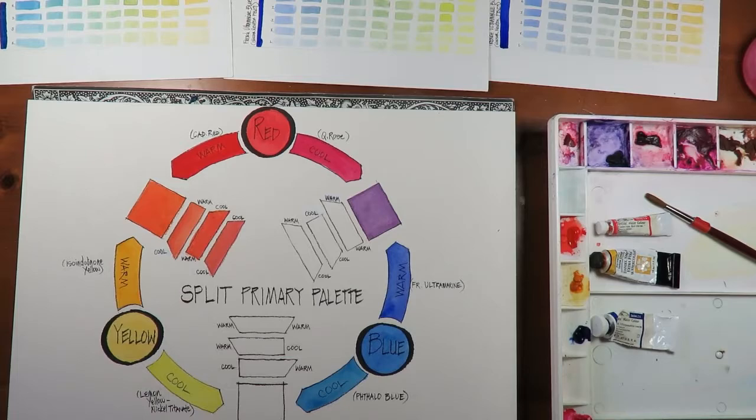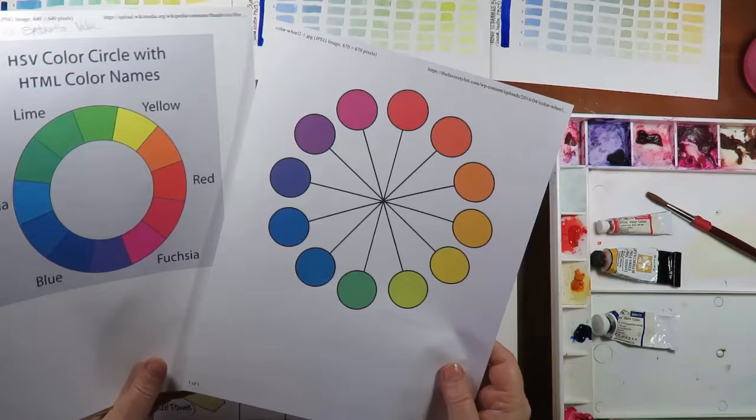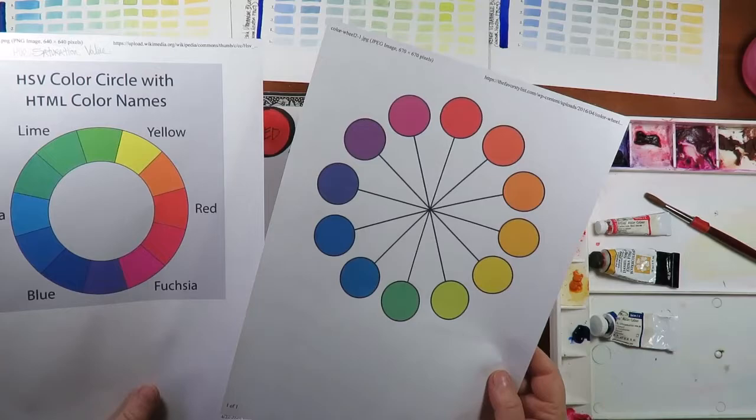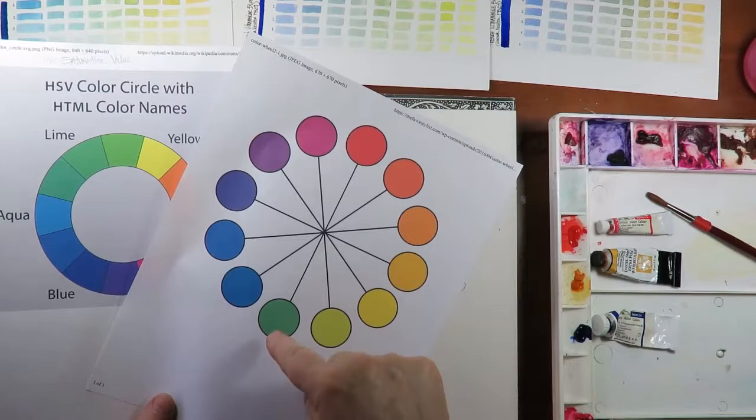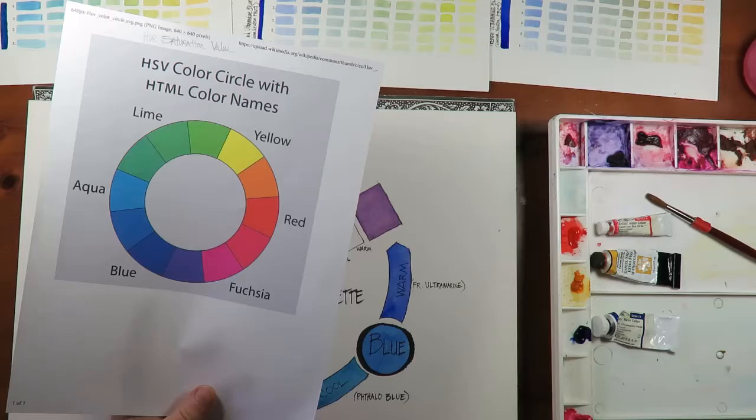Palettes and color wheels are all different. Here are a couple. Because some are based on theories and traditions from past centuries or how we name only some colors in our language. For instance, see how red is across from green on this one? And red is across from aqua on this one. Aha!